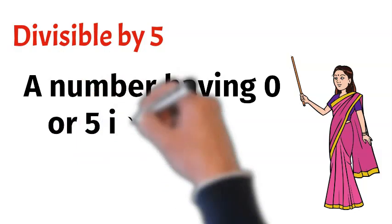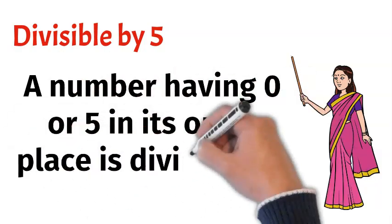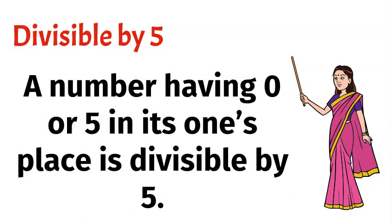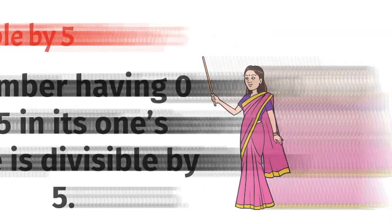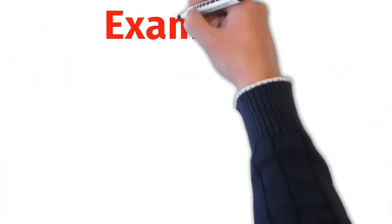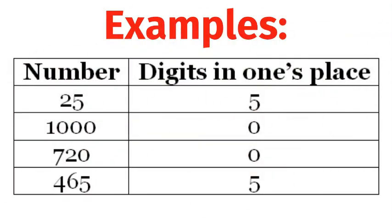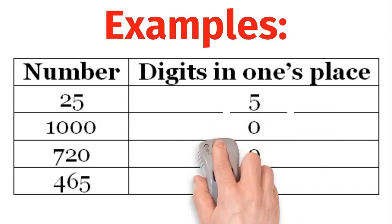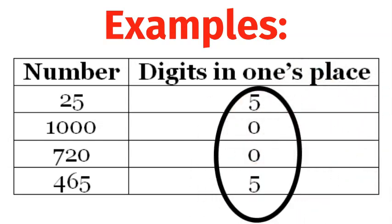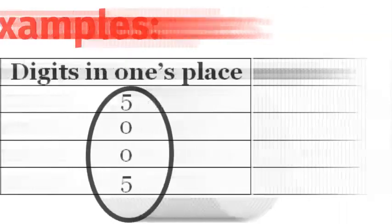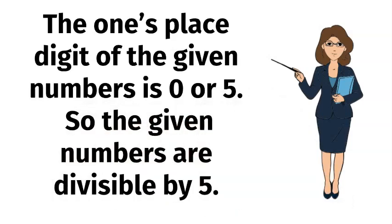Divisible by 5. A number having 0 or 5 in its 1's place is divisible by 5. For example, 25, 1720, 465. The 1's place digit of the given numbers is 0 or 5, so the given numbers are divisible by 5.